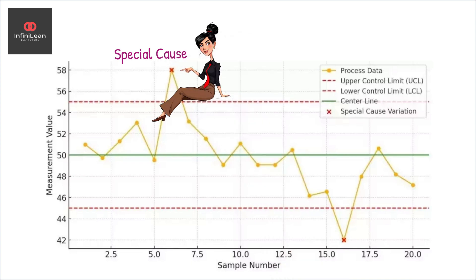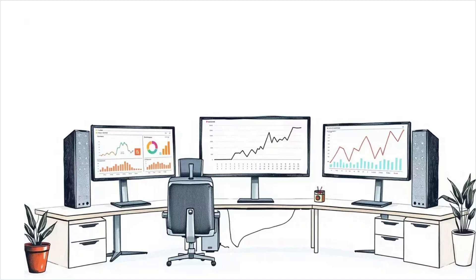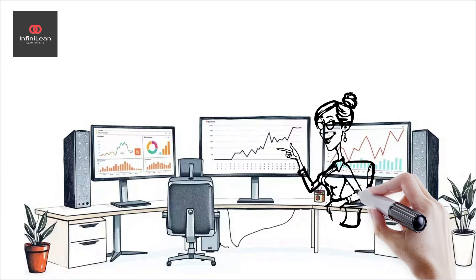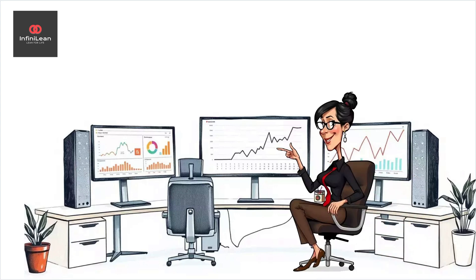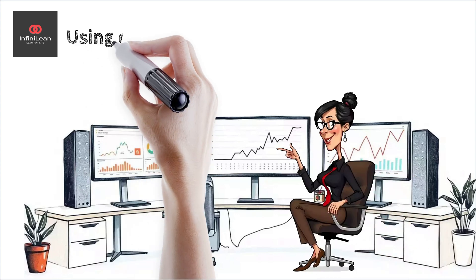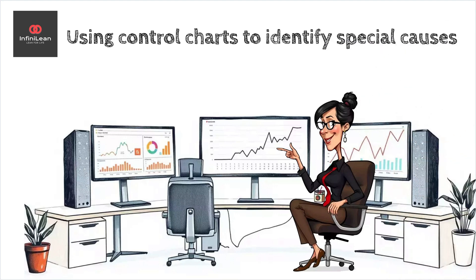Identifying special cause variation requires a keen eye and sometimes intricate tools like control charts. These charts help us see beyond the noise, spotting those outliers that signal something unusual is happening. Imagine a stubborn blip on your radar, a spike or a dip that shouldn't be there. That's your clue. Recognizing it is the first step toward corrective action.